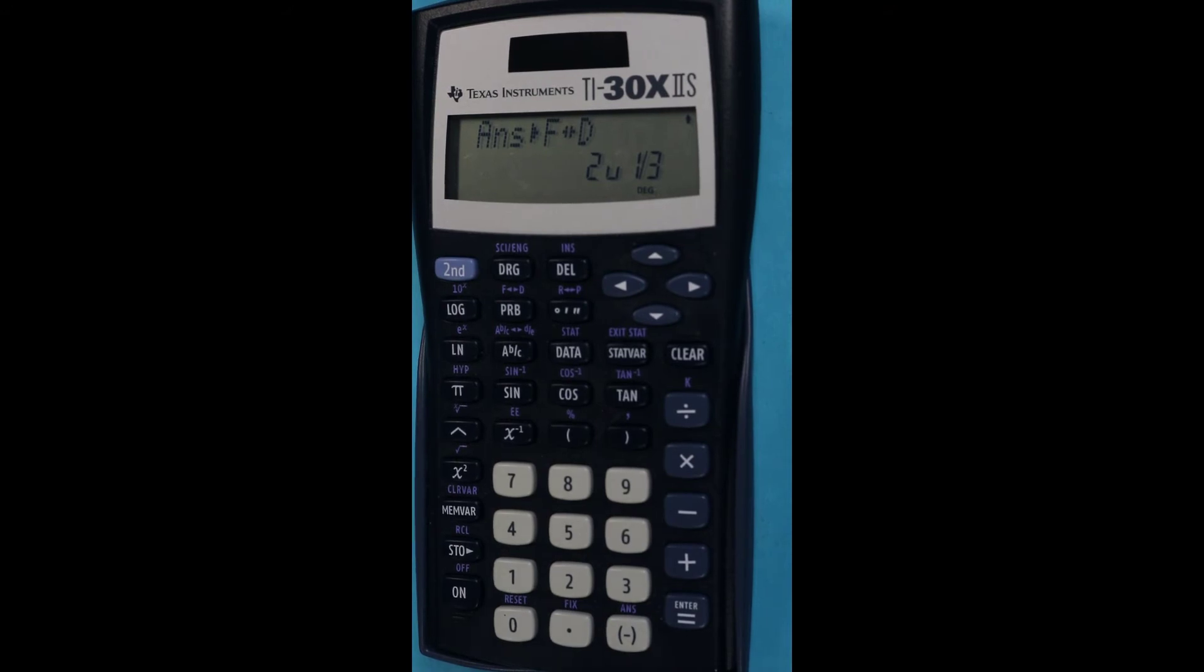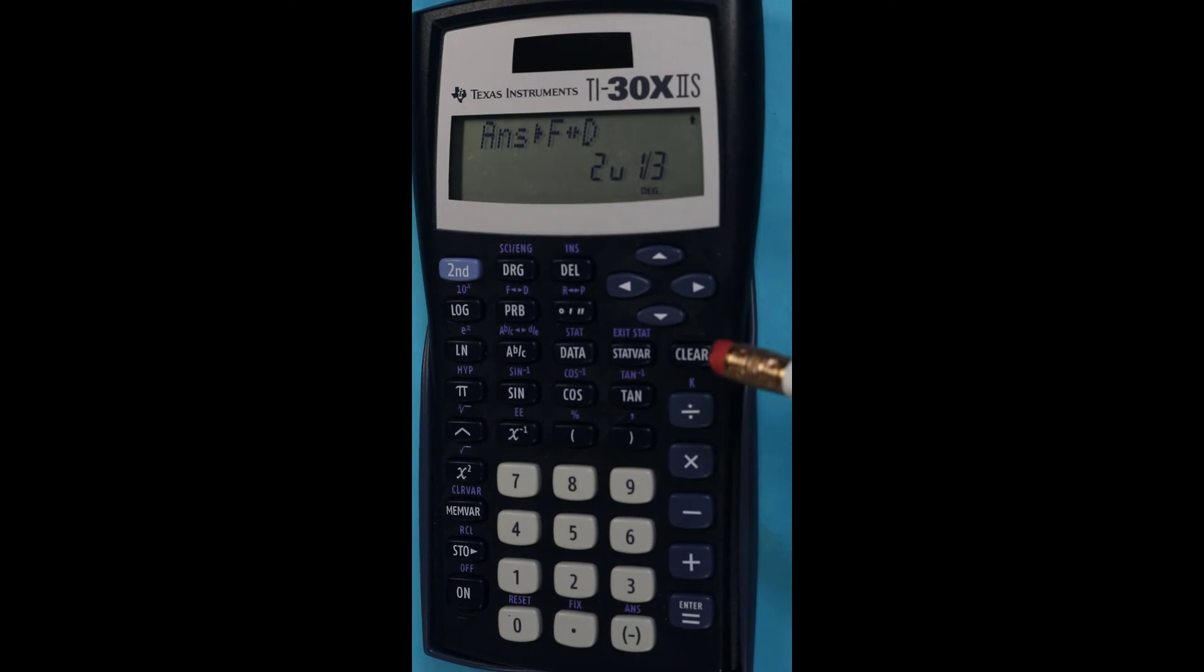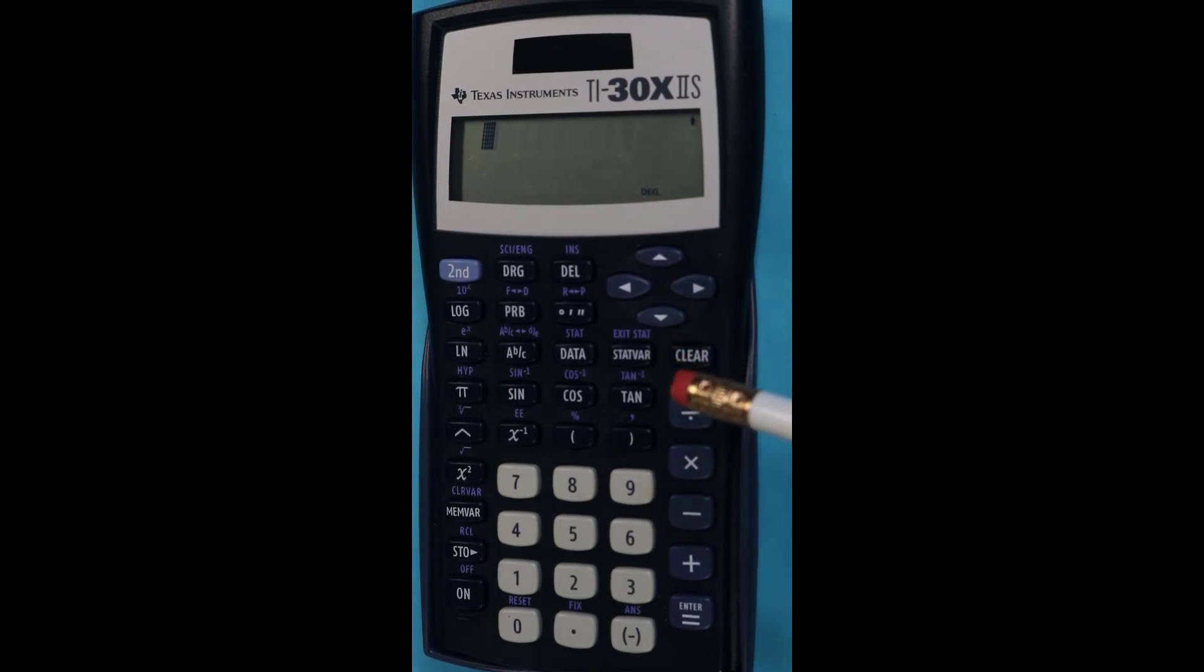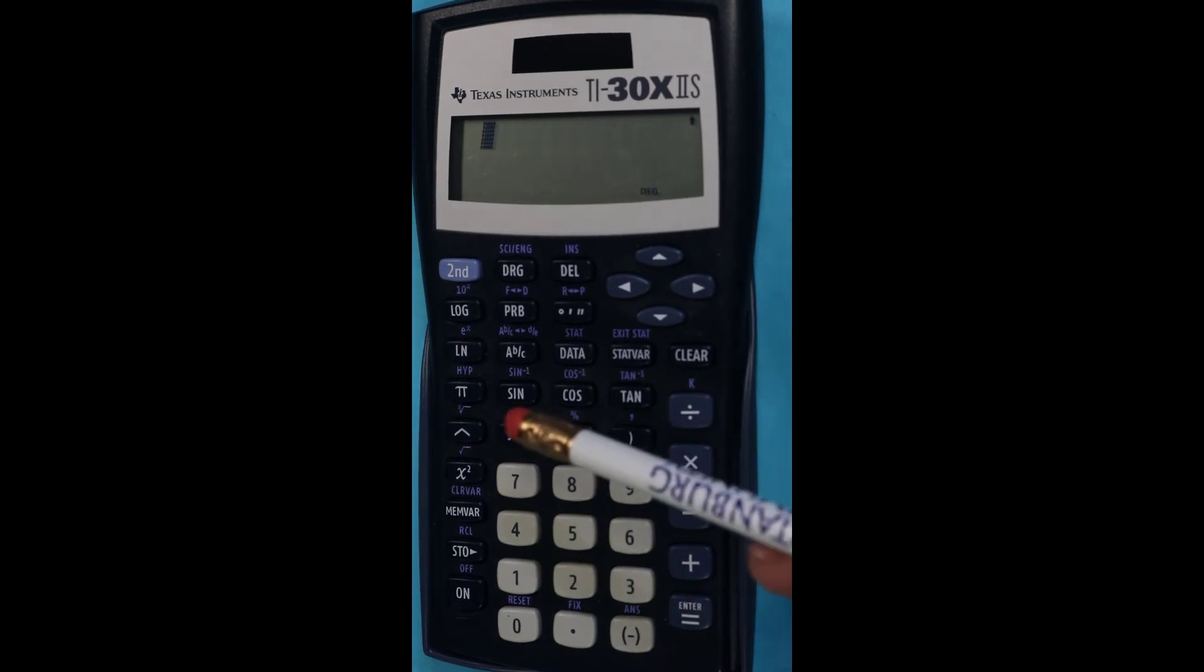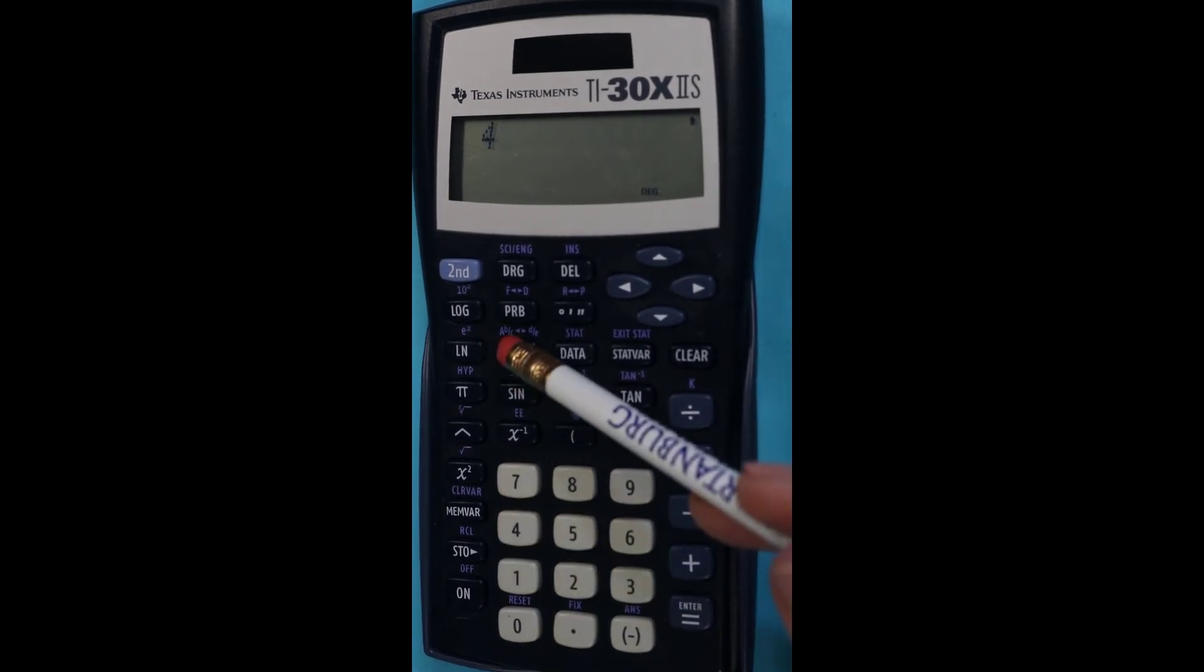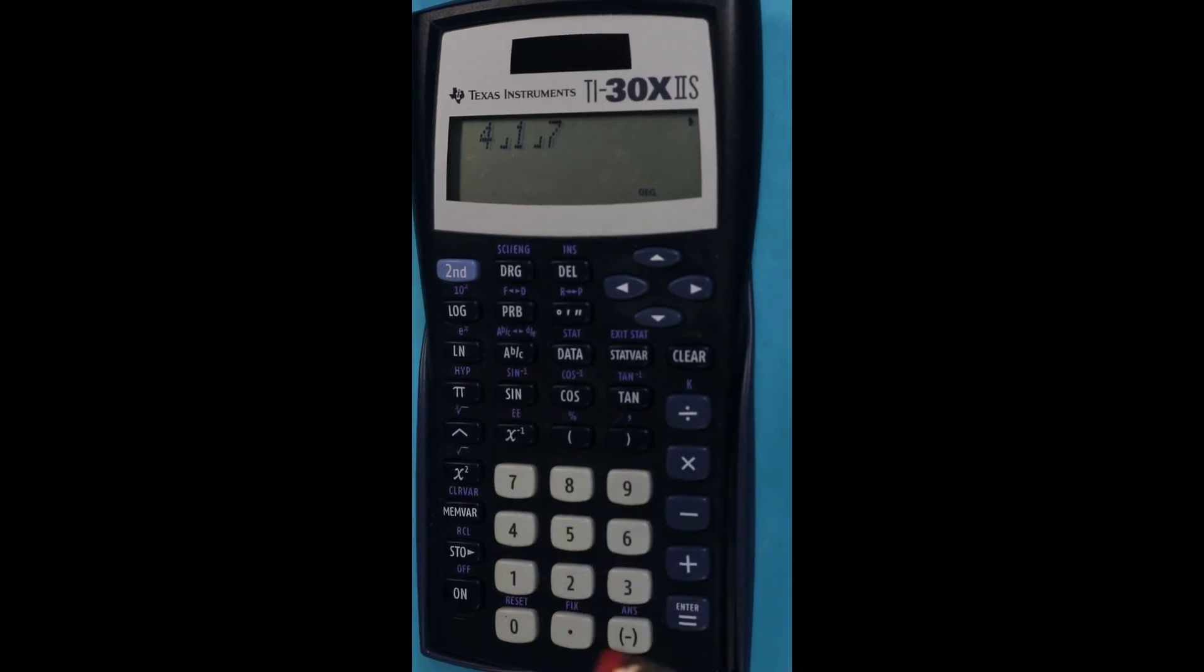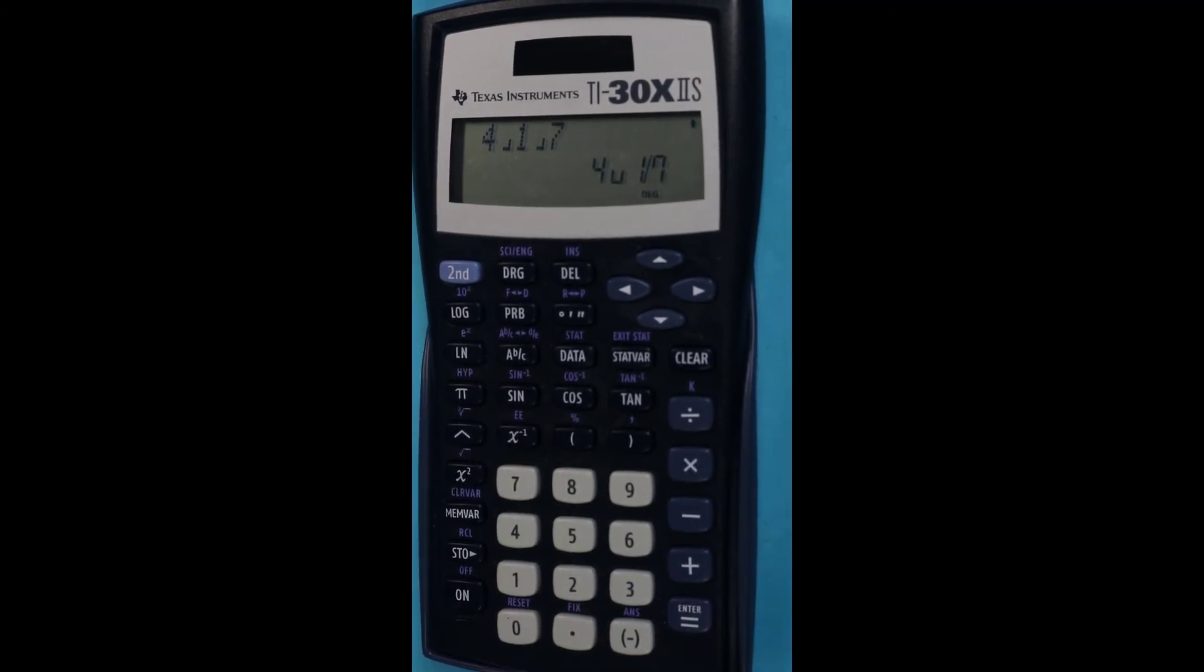So that's one. Let's try one more just for practice. Let me clear out what I had and I'm going to take the mixed number 4 and 1/7. So 4, fraction key, 1, fraction key, 7, enter. You see the mixed number.